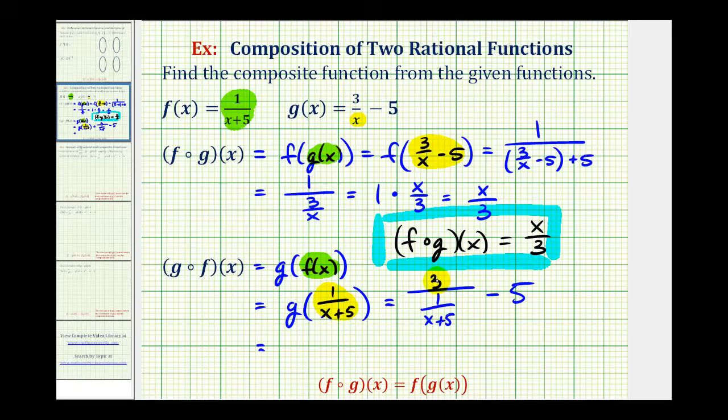Now for the next step, this is three divided by this fraction, which is the same as three times the reciprocal of this fraction. So this would be three times the reciprocal of one over x plus five is just x plus five. And then we still have this minus five here.